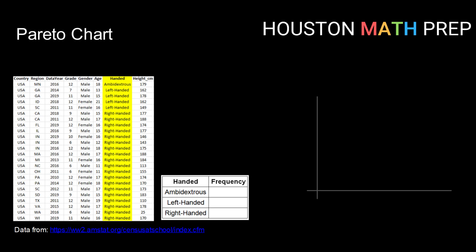Hey guys, welcome back. Houston Math Prep here. In our previous couple of videos we've been talking about histograms — those are graphical displays for quantitative data, or more specifically, bar graphs that represent quantitative data. Now you might have been wondering, is there a bar graph for qualitative data? And the answer is definitely yes, and it is called a Pareto chart.